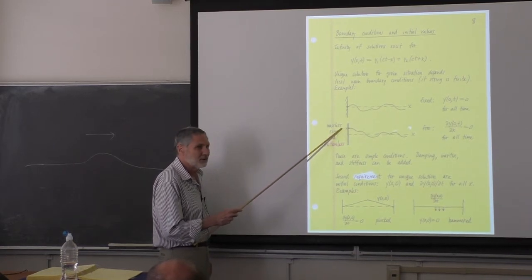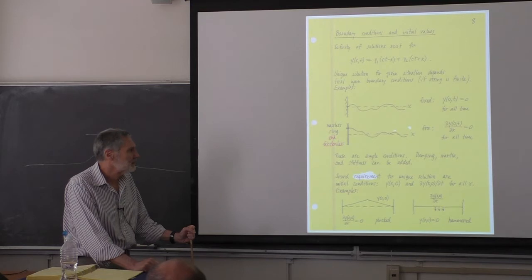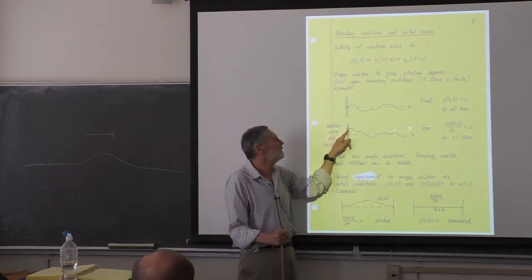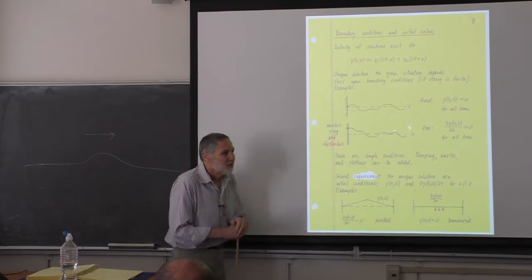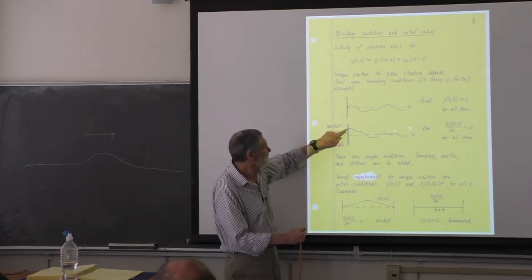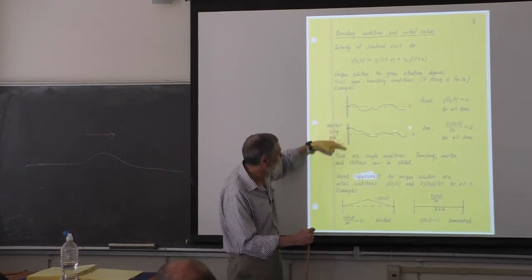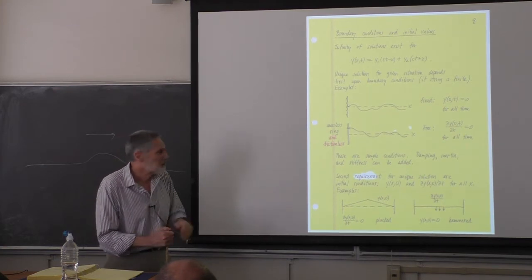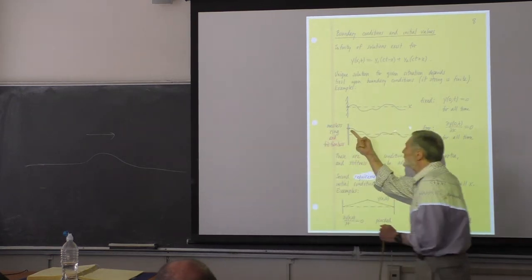For a fixed boundary with an upright incident pulse, the image pulse must be at the same distance on the other side, inverted, and traveling in the opposite direction. On the infinite string there's no reflection — each pulse just keeps going. By superposition, when the two pulses overlap at the origin, the net displacement is zero, satisfying our boundary condition. So the conclusion is: a pulse coming into a fixed boundary reflects as the same pulse but inverted.